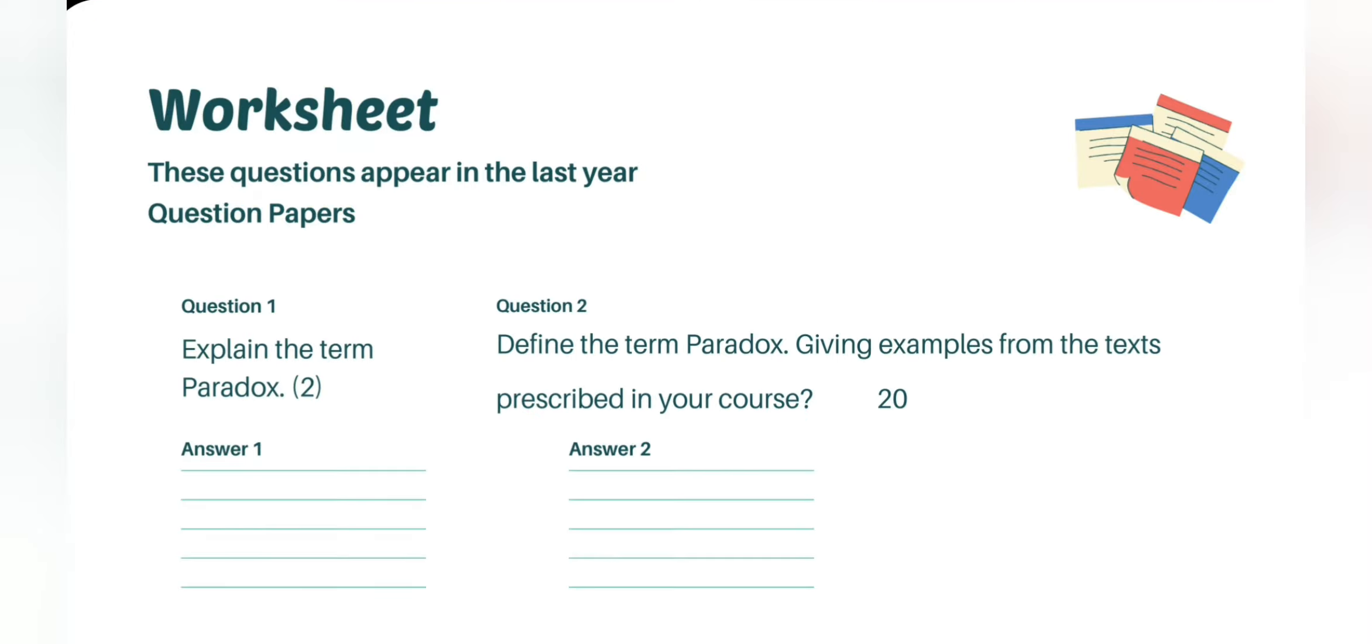Well, from exams point of view, last year, in the last year question papers, for two marks, the question was asked: explain the term paradox. And for 20 marks, the question was like this: define the term paradox and give examples from the text prescribed in your course.